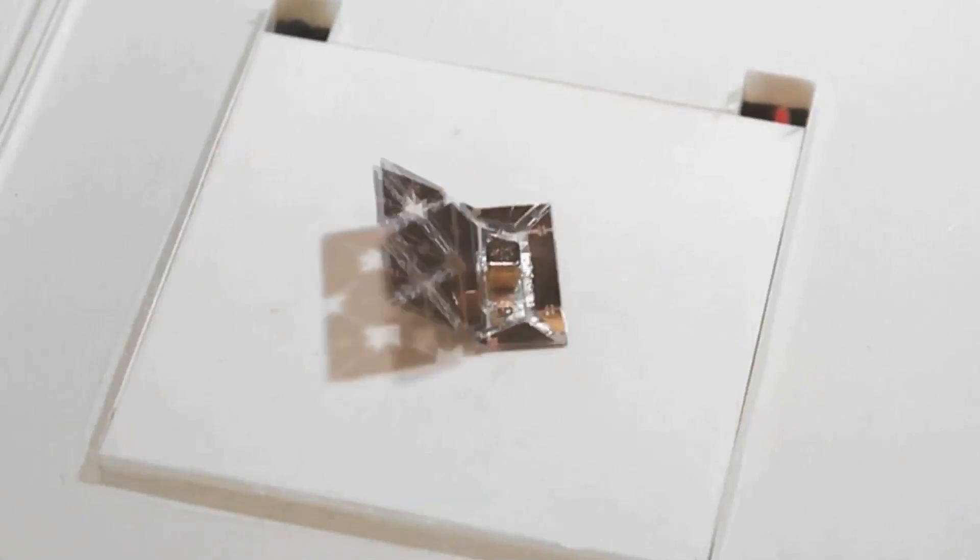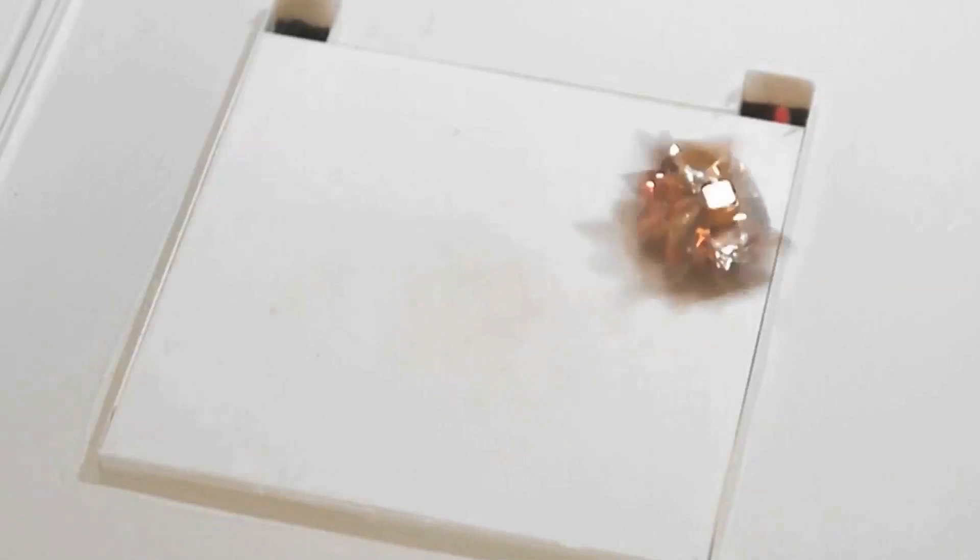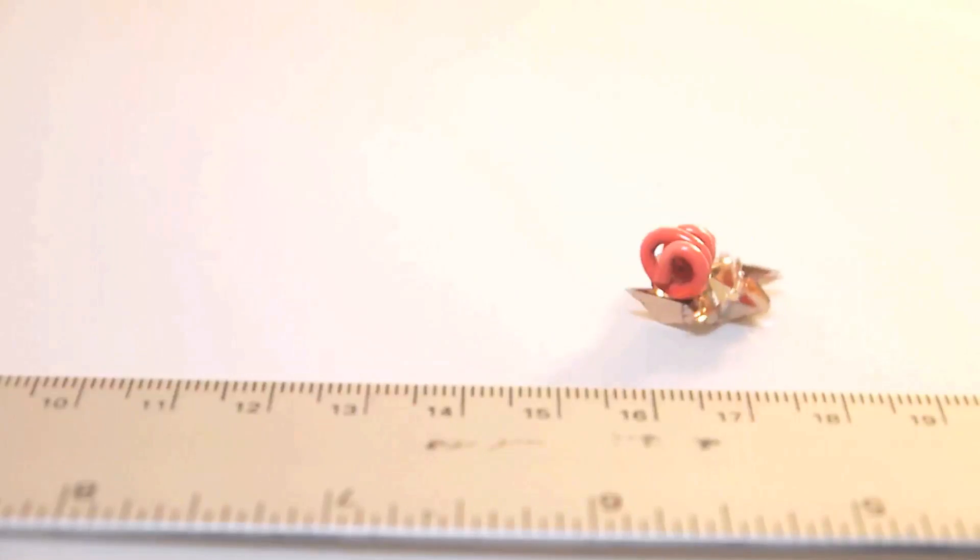The robot self-assembles using a folding process that is triggered by heating. After this, the robot can run along designated trajectories, carry objects, clear obstacles, swim, and execute a variety of tasks.